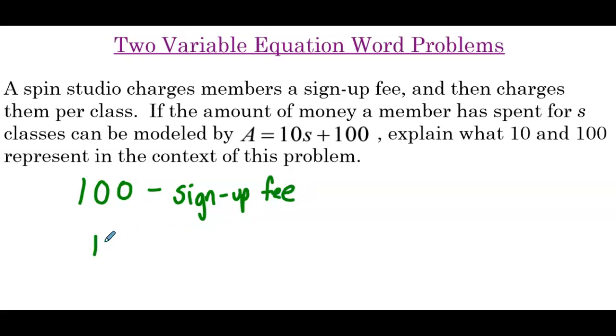And then now moving on to the 10, what does the 10 represent? Well, s is the number of classes. So we take one class, we have 10 plus 100. So now we owe 110. Two classes, we'd have 10 times 2, so 20 plus 100, 120. So every class that we take, the amount that we owe goes up by $10. So what is 10 then? That's the cost per class. Every spin class that we take, we owe another $10.